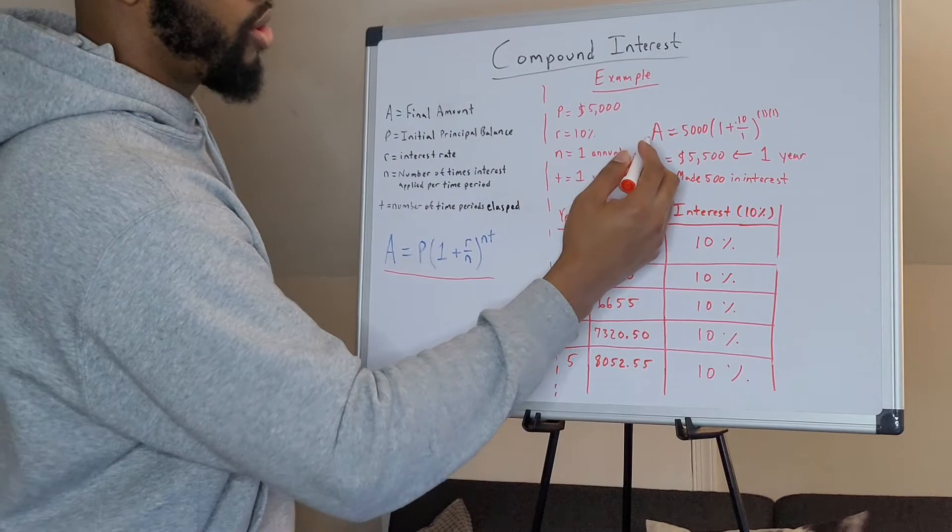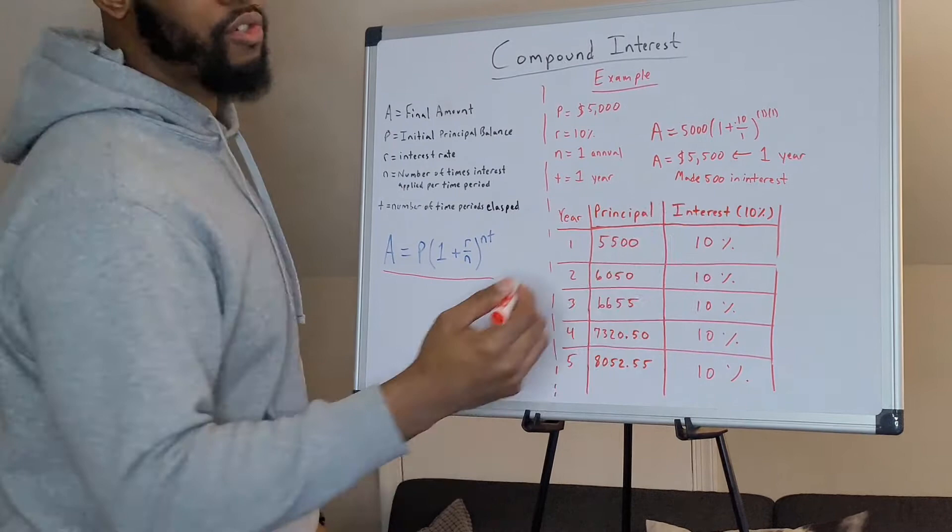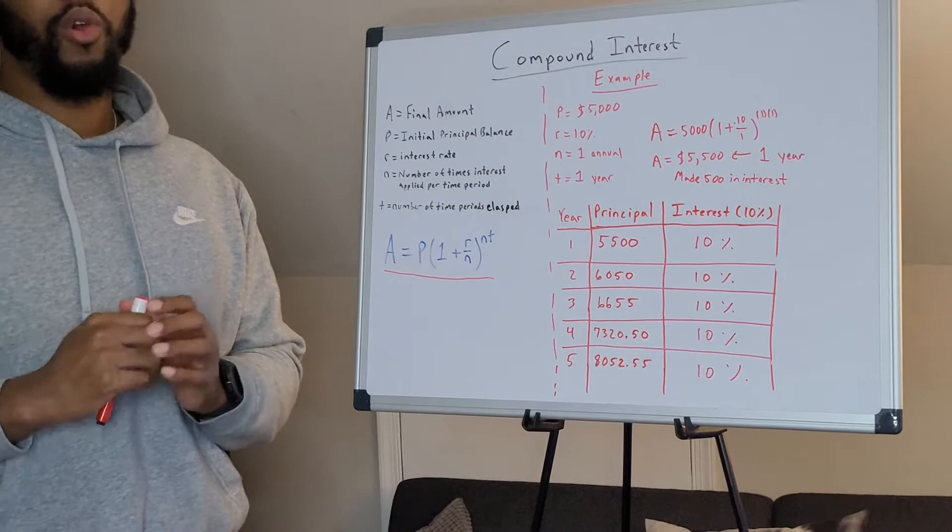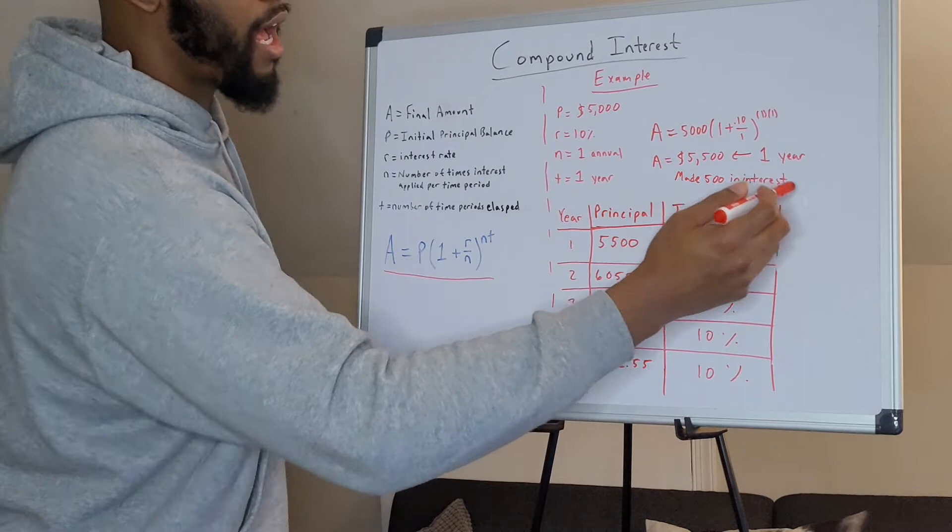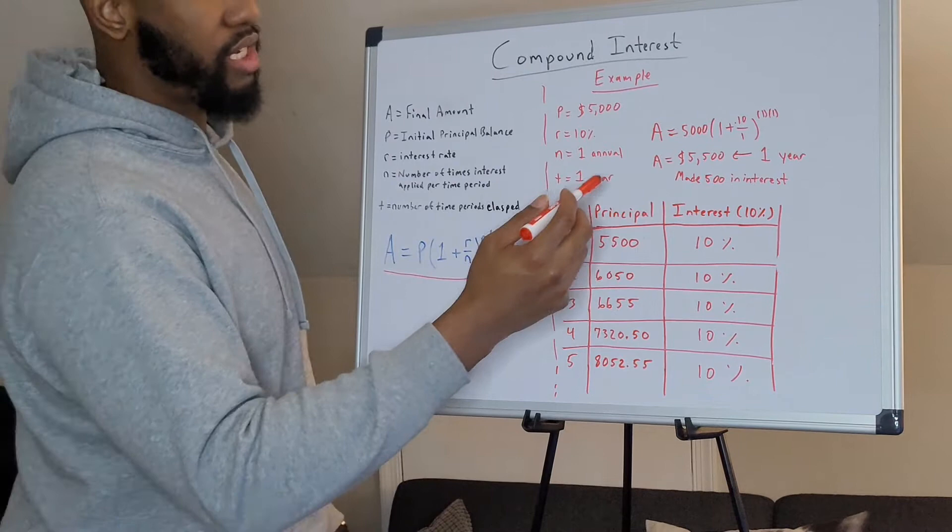So when we look at that and we plug those numbers into our compound interest formula, after year one, we get $500 in interest with half the money we had in our savings account. We made over $400 more with half of that in this mutual fund. And this is the beauty of compound interest. This interest you make gets compounded and added back to your initial principal in year two.